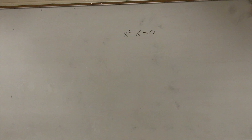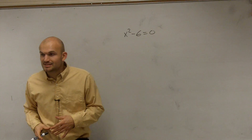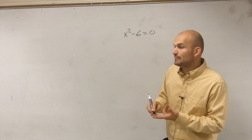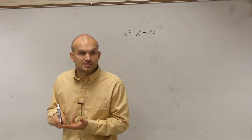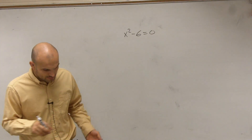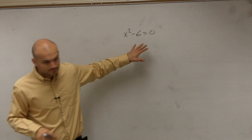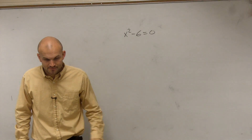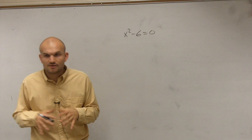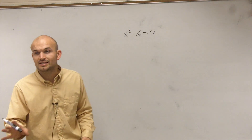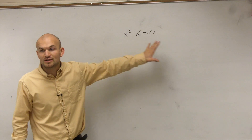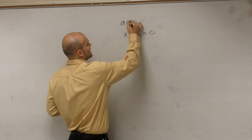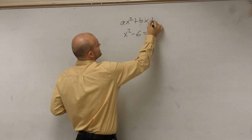We're doing number 6 here. What I have is x squared minus 6 equals 0. What I want to do is show you how to find the value of the discriminant, describe the solutions of your discriminant, and then also solve for the solutions of your quadratic equation. First, we have to make sure that our quadratic is in quadratic form: ax squared plus bx plus c equals 0.